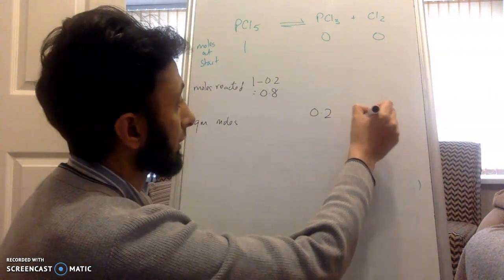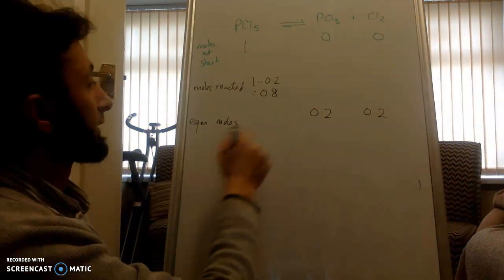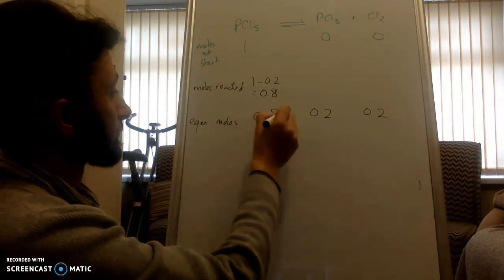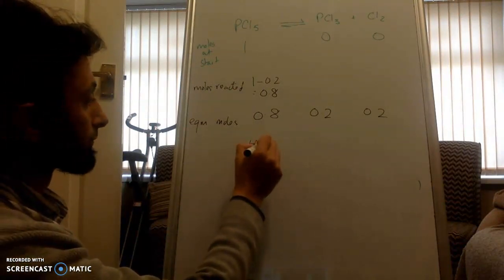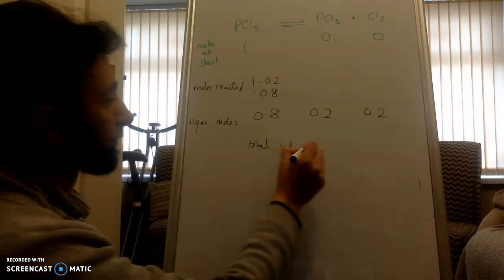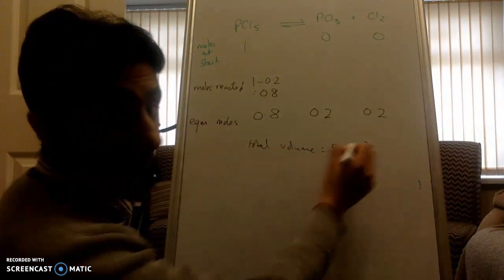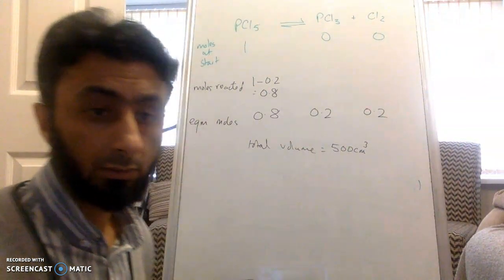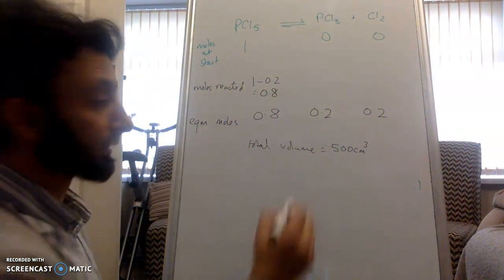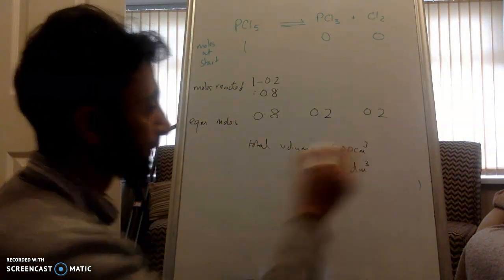0.2 of chlorine is formed. Equilibrium moles... total volume equals 500 cubic centimeters, which is 0.5 dm cubed.